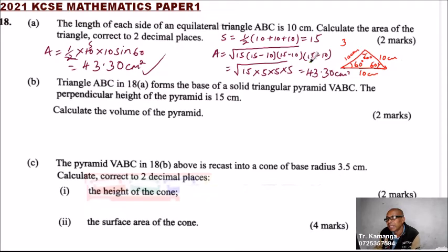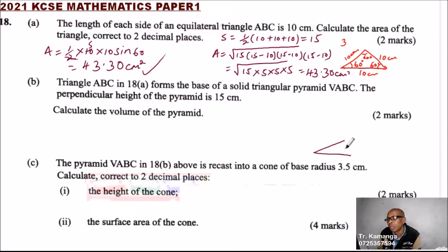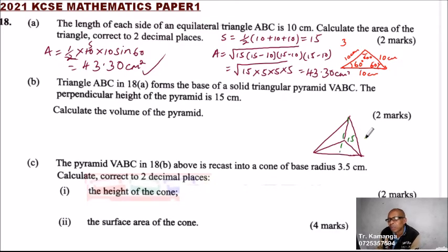We look at Part B of the question. Triangle ABC from 18A forms the base of a triangular pyramid VABC. The perpendicular height of the pyramid is 15 cm. Calculate the volume of the pyramid. The triangle is used to make a pyramid with a triangular base, and the height from apex to base is 15 cm.